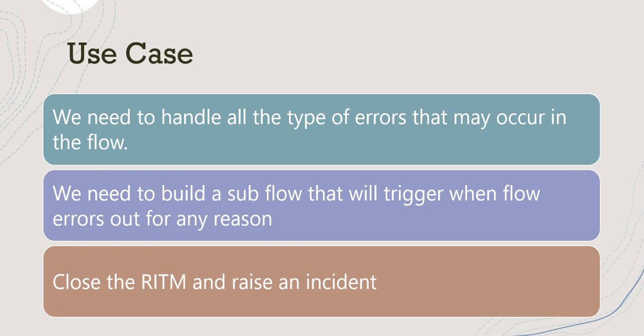If any kind of error happens in the flow, it will automatically come into the error handling section of Flow Designer, so you don't have to worry about calling that section on your own. If you haven't checked out that video, please click on the top right corner or use the link in the description. We will also build a sub flow that will trigger when the flow errors out, which will be called in the error handling section. If you want to learn more about sub flows, the link will be in the description.